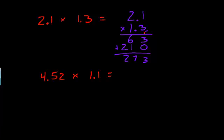And we count. In this one, there are 1, 2 decimal places in the multiplication problem. So we need 2 decimal places in our answer. So our answer is going to be 2.73.